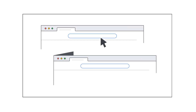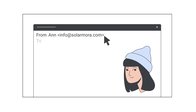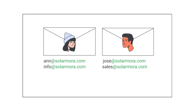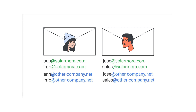Let's say your team owns the domains solarmora.com and other-company.net, and your team manages businesses for both domains. You and your users can send and receive emails using addresses from both domains. As the administrator, you can set up a domain alias to give every user another email using other-company.net.